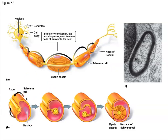Gaps between adjacent Schwann cells are called nodes of Ranvier. Messages are going to travel faster as they jump from one node of Ranvier to the next in a type of transmission called saltatory conduction. In other words, the message can travel a lot faster down the cell if it jumps from node to node instead of transferring all the way through the bulk of the axon.